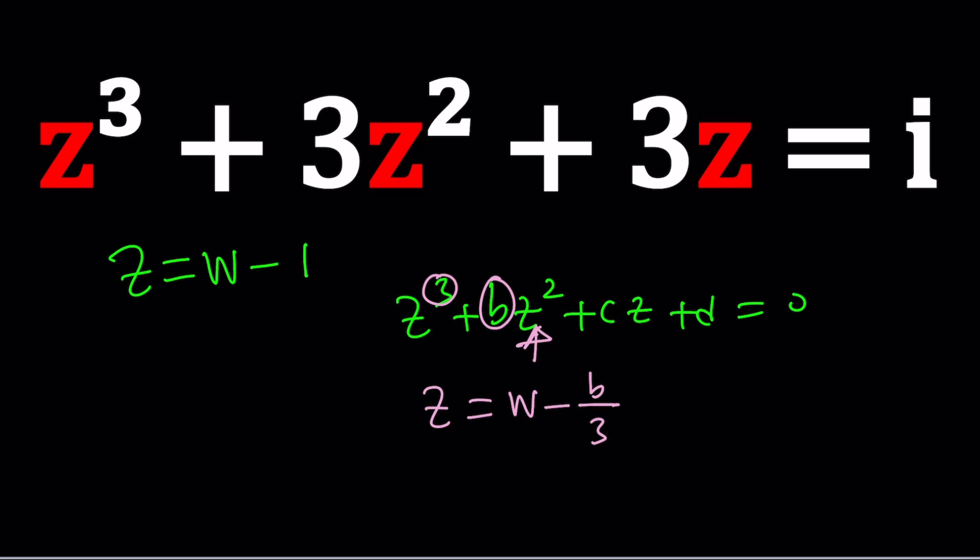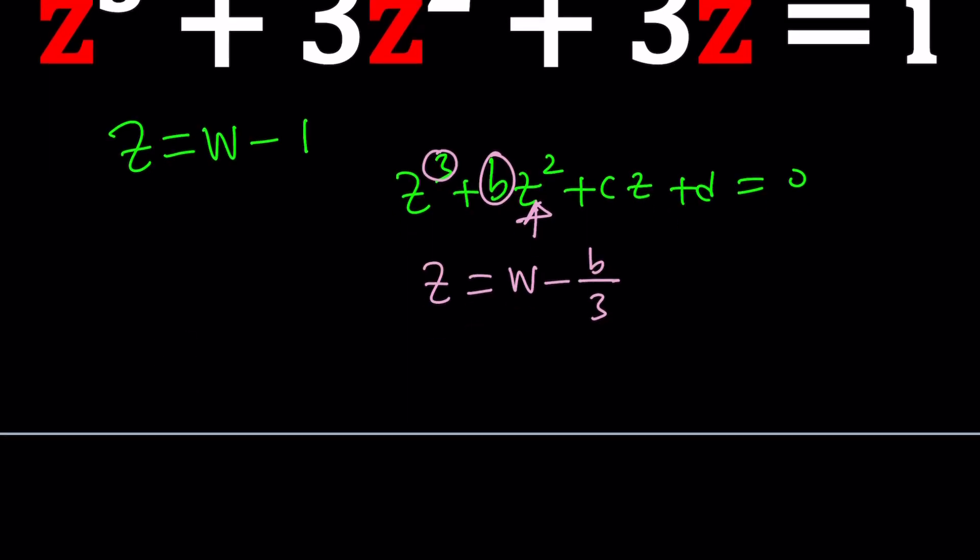So if we do this we should end up with something that is missing the quadratic term and then that can be easily solved using an identity which looks like this: a plus b cubed minus 3ab times a plus b equals a cubed plus b cubed. You should probably know this if you have taken algebra and this is a very well known identity. And then we're going to replace this with w and come up with a cubic equation, and then by looking at the coefficients we will end up with a quadratic equation. Okay so we reduce the degree.